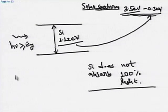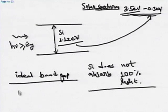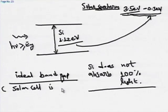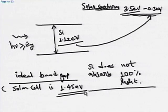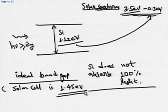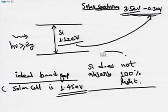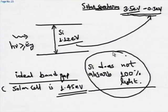Before going further, the ideal band gap of a semiconductor for solar cells is 1.45 eV. We want a semiconductor with 1.45 eV band gap. Looking at the solar spectrum, many photons have energy less than 1.45 eV. So whatever the best solar cell you get, none of them actually absorb 100 percent of the photons falling on them. That is one reason why efficiencies are low.